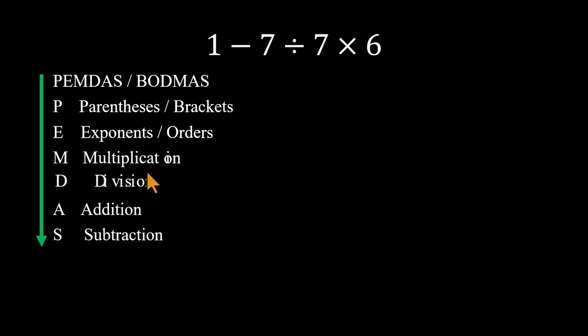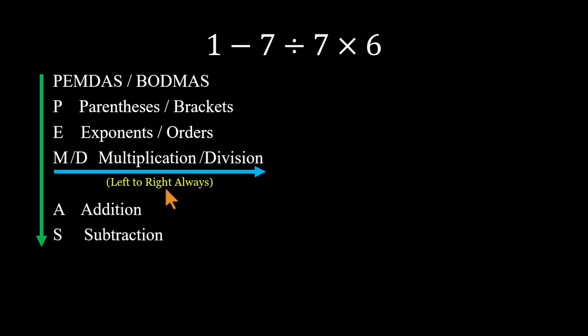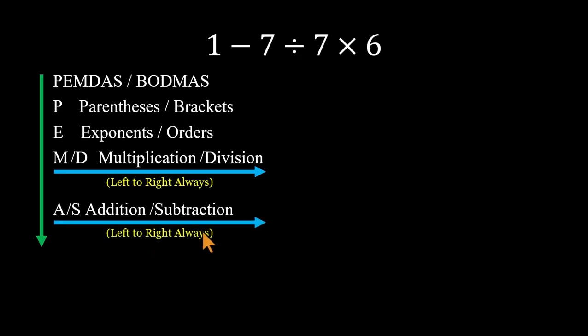Multiplication and division share equal priority, and when both appear, we go left to right. The same holds for addition and subtraction. So even though the problem starts with a minus sign, multiplication and division come before subtraction, and since multiplication and division are equals,